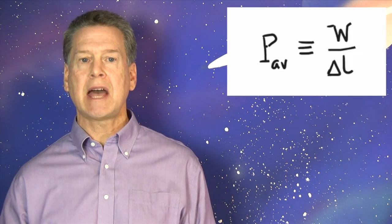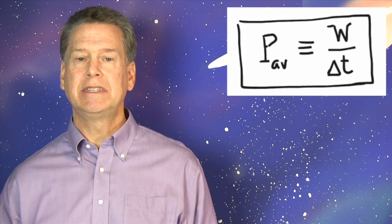If the force that's doing the work varies over time, then the power of that force will vary too. In that case, our definition gives the average power. Capital P sub AV is defined as capital W divided by delta T.